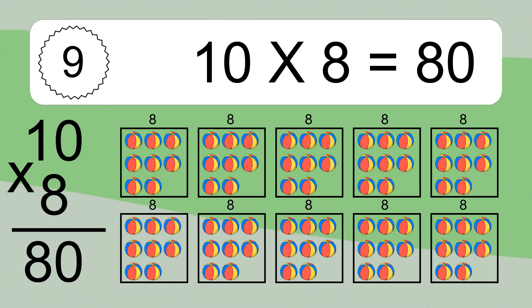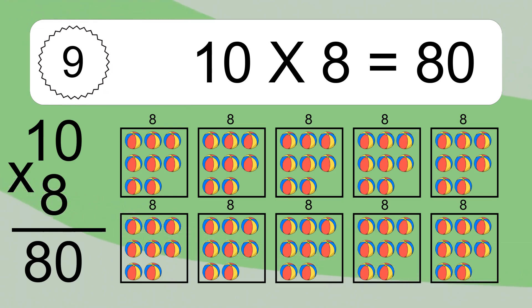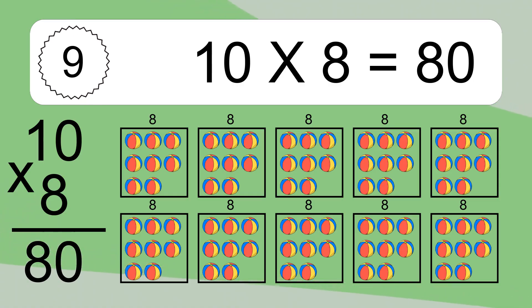We have 10 boxes, and each box has 8 colorful balls inside. If you count all the balls in all the boxes together, you will have 10 times 8 balls. This equals 80 balls.